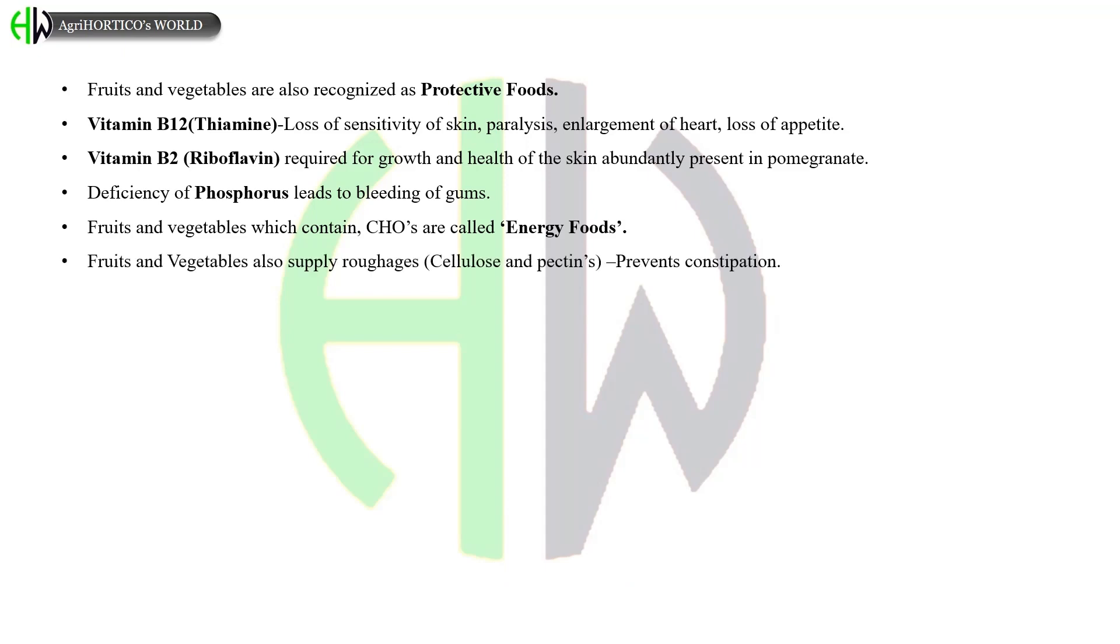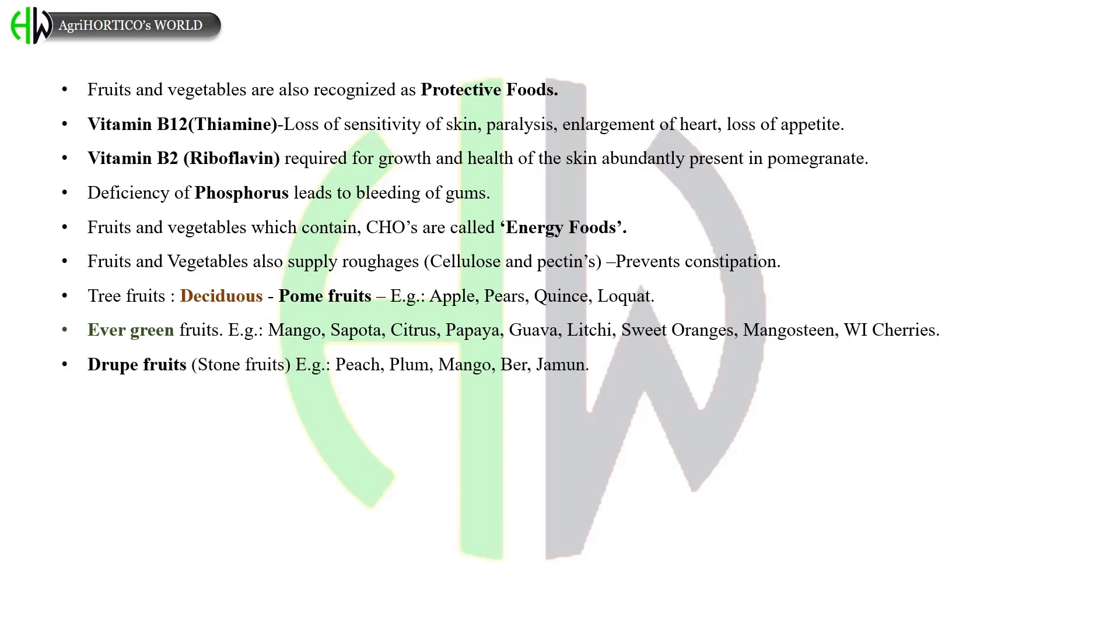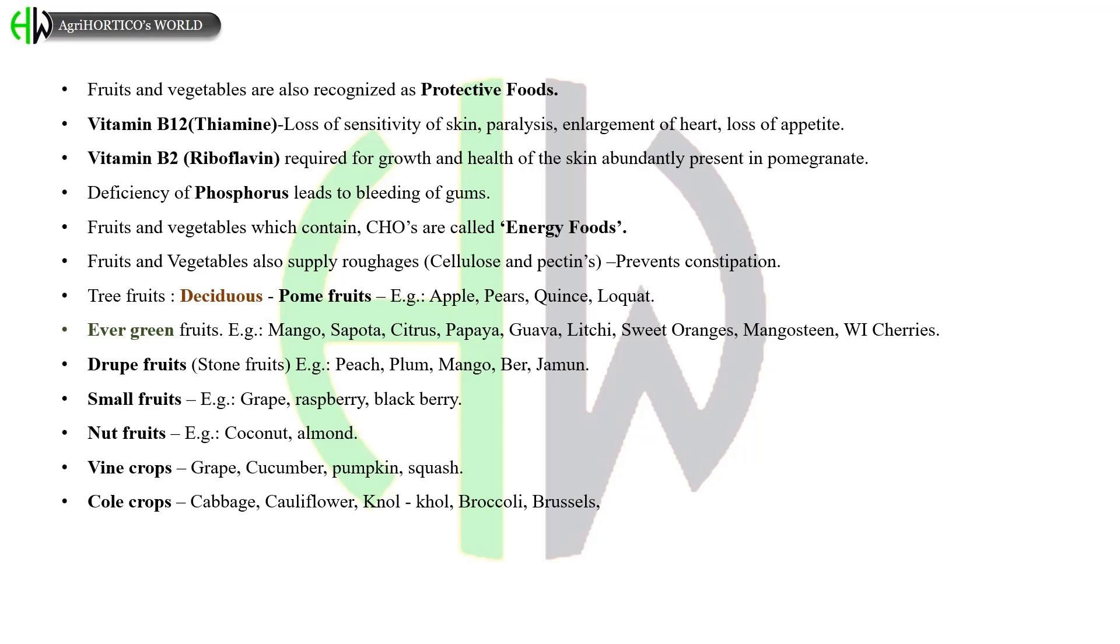Fruits and vegetables which contain carbohydrates are called energy foods. They also supply roughage like cellulose and pectins which prevents constipation. Examples of palm fruits are apple, pears, quince, loquat. Evergreen fruits are mango, sapota, citrus, papaya, guava, litchi, sweet oranges, mangosteen, West Indian cherries. Drupe fruits, also called stone fruits, are peach, plum, mango, ber, jamun. Small fruits examples are grape, raspberry, blackberry. Nut fruits are coconut, almond. Vine crops are grape, cucumber, pumpkin, squash. Cole crops like cabbage, cauliflower, kohlrabi, broccoli, Brussels sprouts. Salad crops are lettuce, coriander.